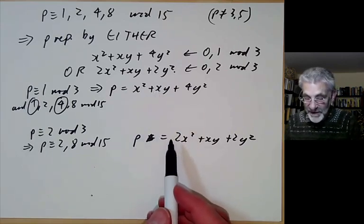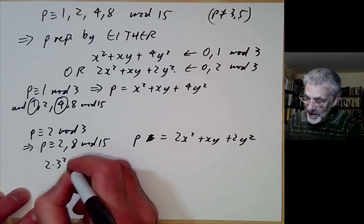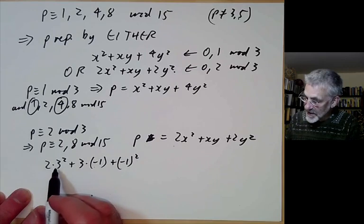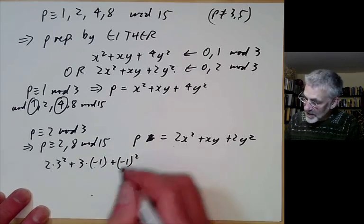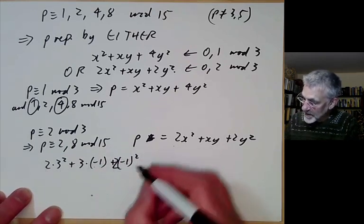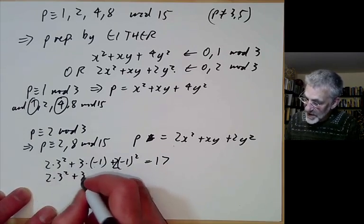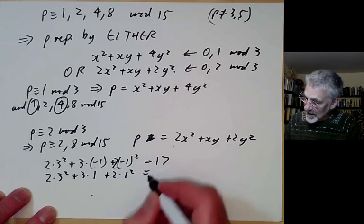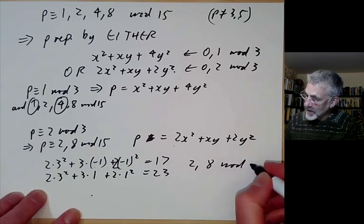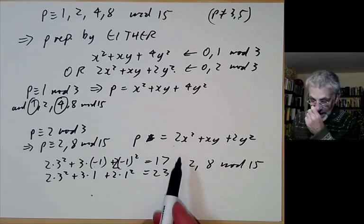We can see some examples. Taking 2(3²) + 3(-1) + (-1)² gives 18 - 3 - 3... with a factor of 2 that gives 17. And 2(3²) + 3(1) + 2(1²) gives 23. We notice 17 and 23 are 2 and 8 modulo 15 respectively, so the form 2x² + xy + 2y² is indeed representing primes that are 2 or 8 mod 15.